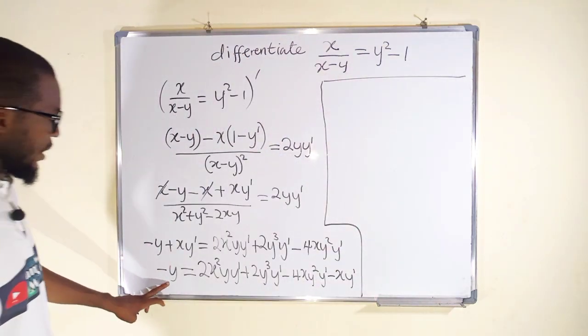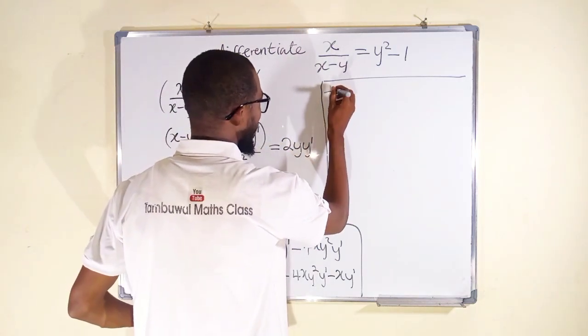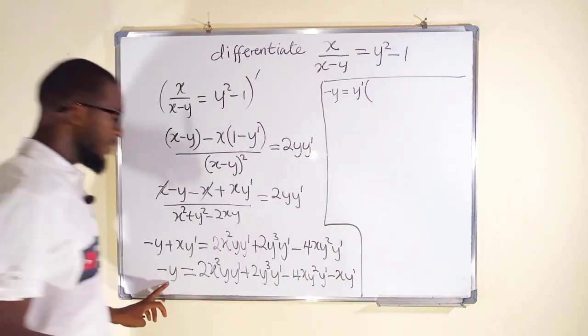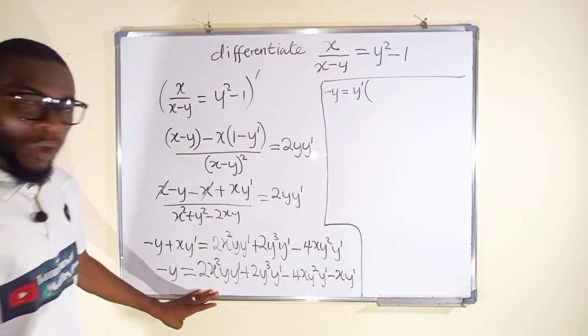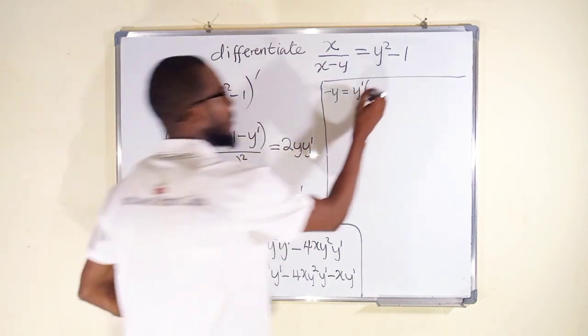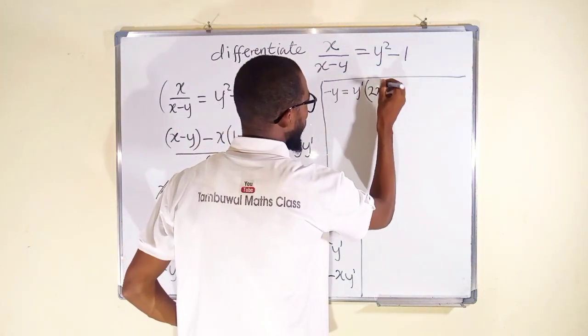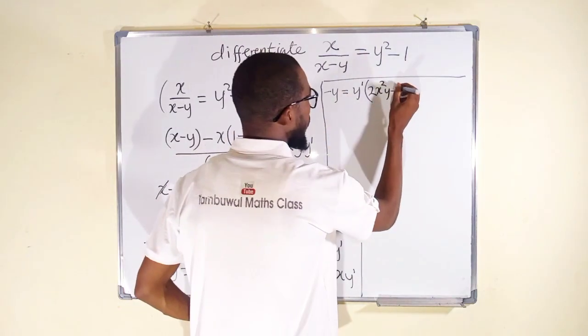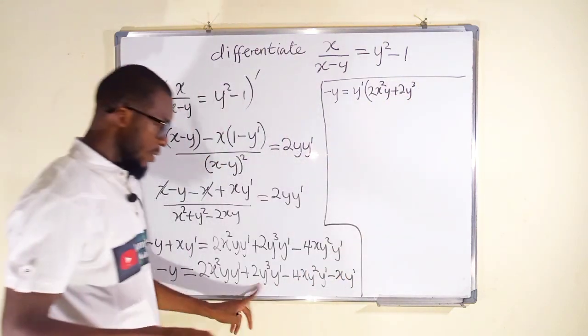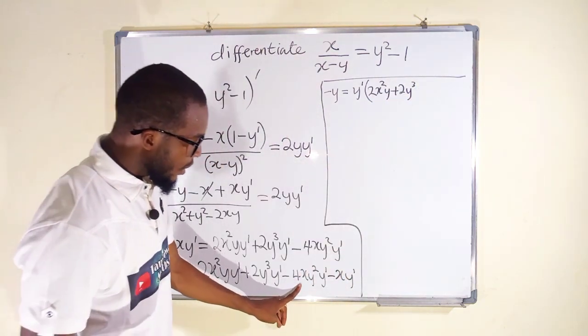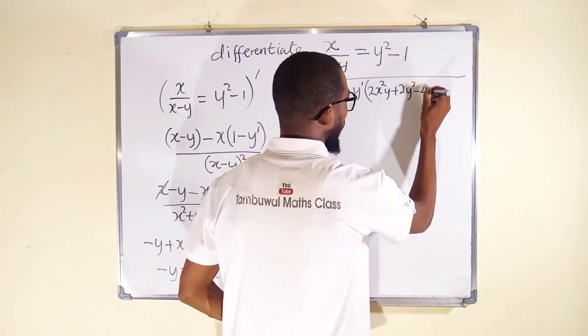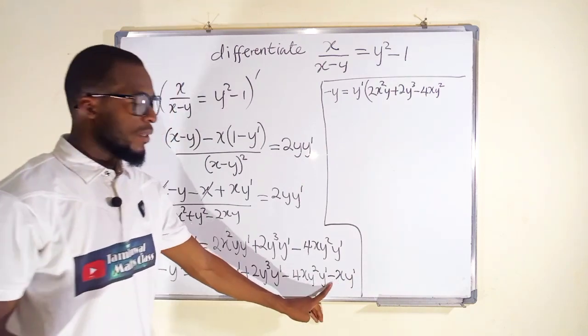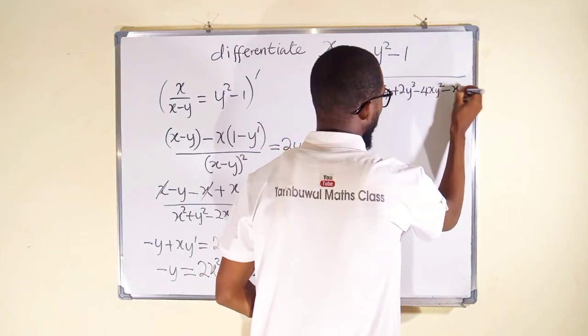Thereby leaving only negative y to the left. Negative y and this is equal to y prime outside. Inside we write every single term without y prime. We have 2x squared y plus 2y cubed minus 4xy squared and lastly minus x.